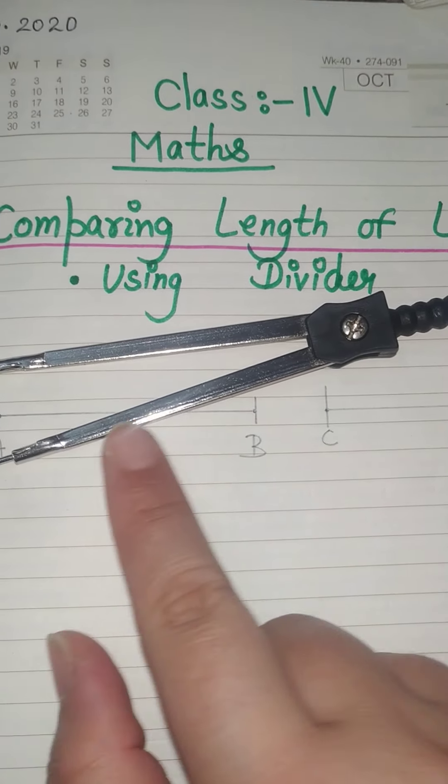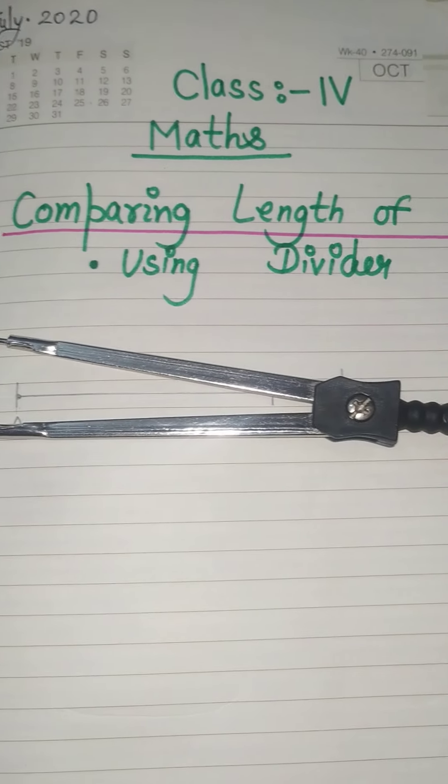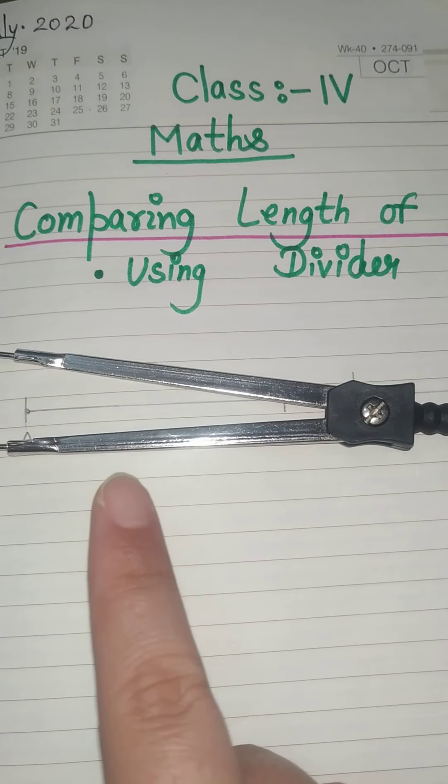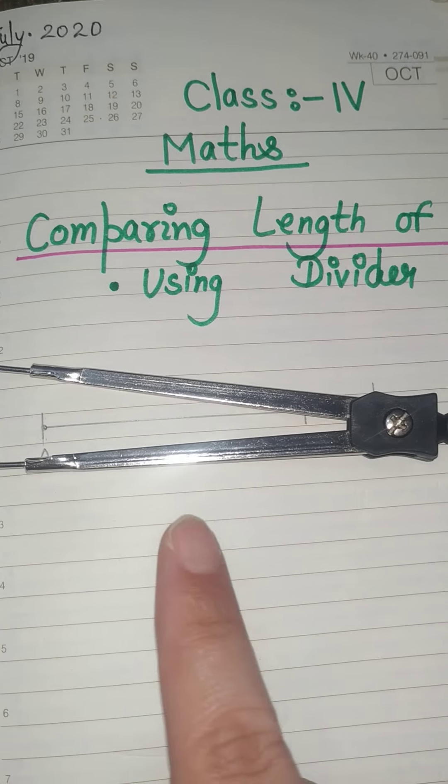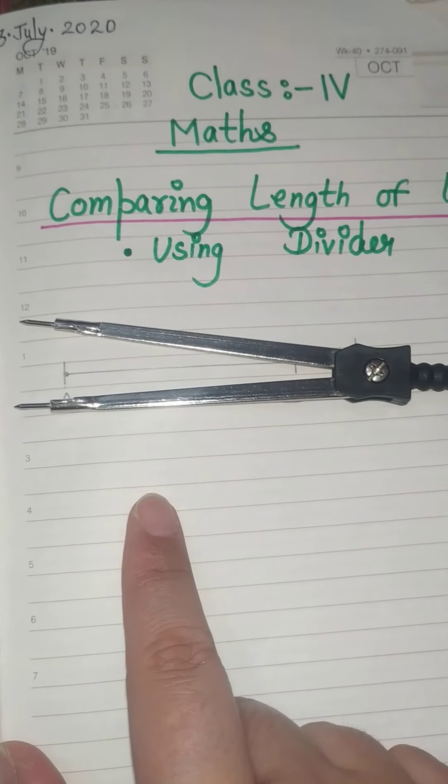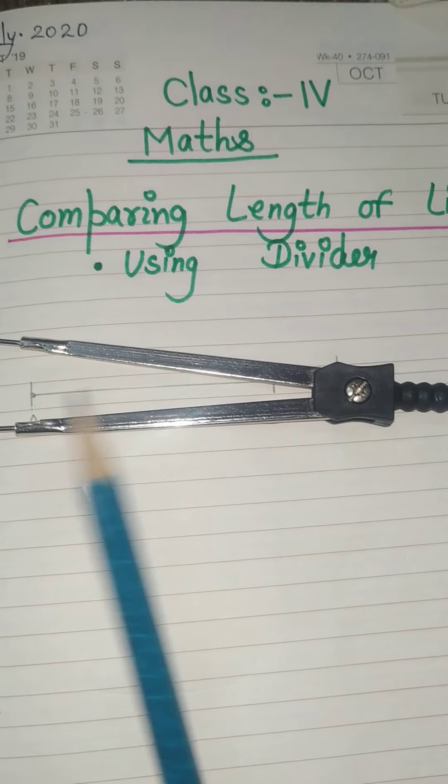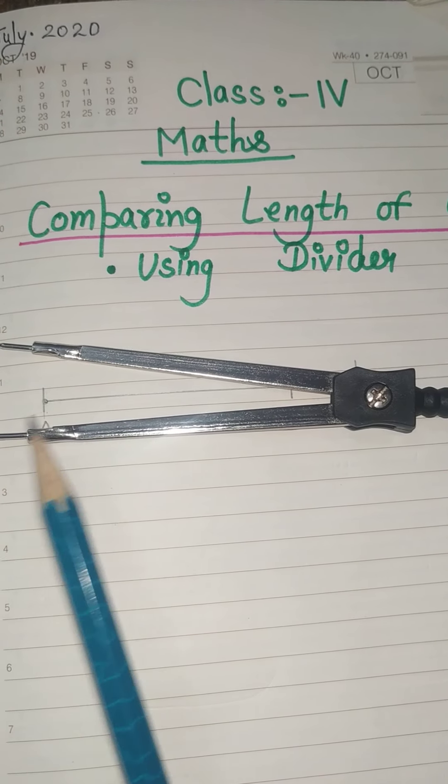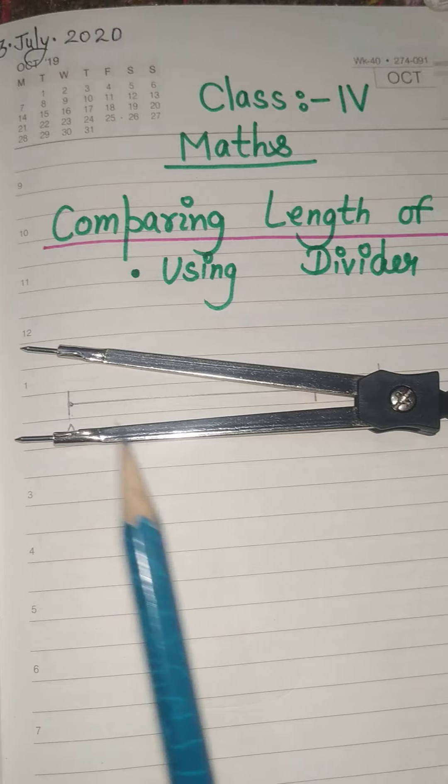So this apparatus, as you can see, this apparatus is known as a divider. It is given in the geometry box. The geometry box has different instruments, so this is one of the instruments present in your geometry box.